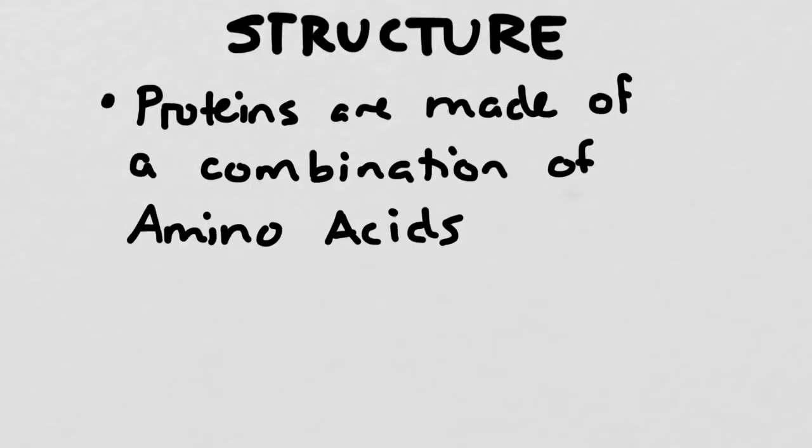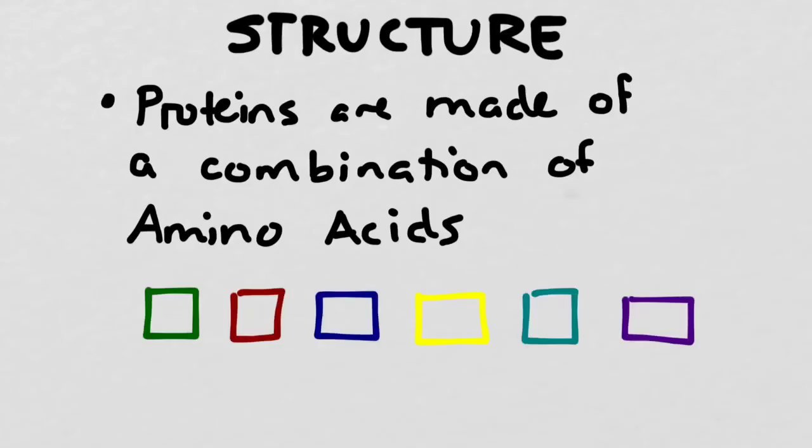Now let's talk protein structure. So no matter what kind of protein you're creating, you're going to make it out of a combination of 20 different amino acids. So you might have a lot of one kind, just a few of another, but there are 20 different varieties of amino acid building blocks. So let's imagine that each one of these different colored squares is a different amino acid. Now we only have six different varieties here, but remember that there are actually 20 different kinds of amino acids.